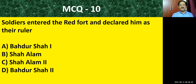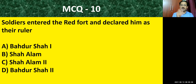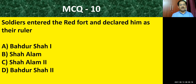MCQ question number ten: soldiers entered the Red Fort and declared him as the ruler — who is that person? Options: Bahadur Shah First, Shah Alam, Shah Alam Second, Bahadur Shah Second. The correct answer is Bahadur Shah Second.